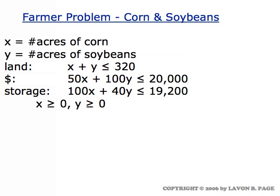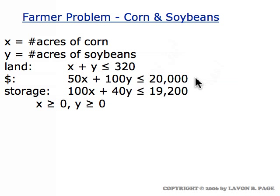Let's start by applying it to the kind of farmer problem that we've seen in the past — a farmer planting corn and soybeans. We had X and Y representing respectively the number of acres of corn and soybeans. We had a land constraint that stemmed from the fact that it was a 320-acre farm.